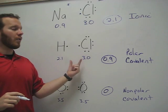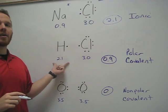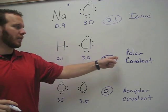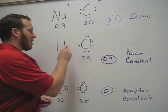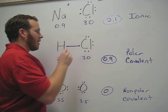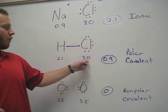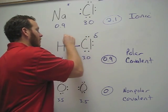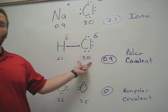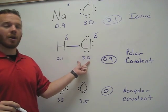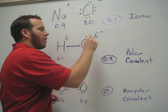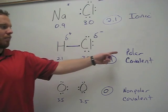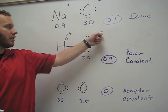Now we look at HCl. Chlorine again is 3, but now hydrogen is 2.1. The difference is 0.9, which our chart tells us is polar covalent, so they share. However, because chlorine is quite stronger than hydrogen, there are partial charges. Because chlorine is stronger, it gets more of the electron, which means it's partially negative, leaving hydrogen to be partially positive. And that's what polar means — opposites, minus and plus.